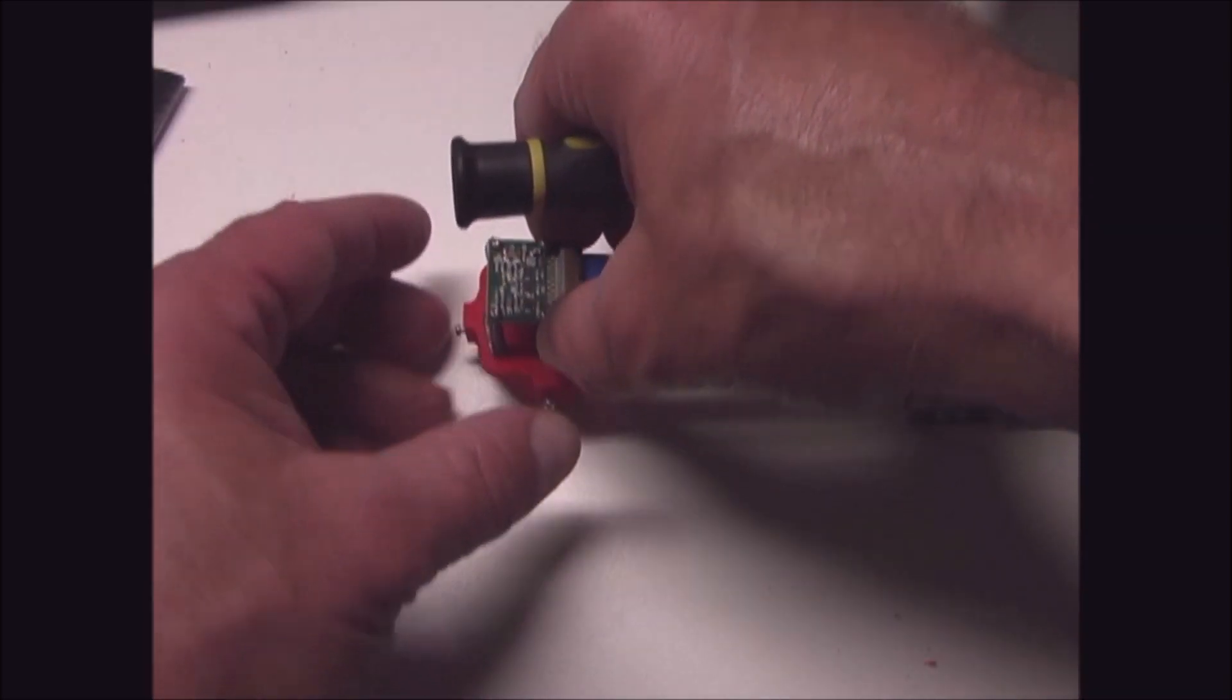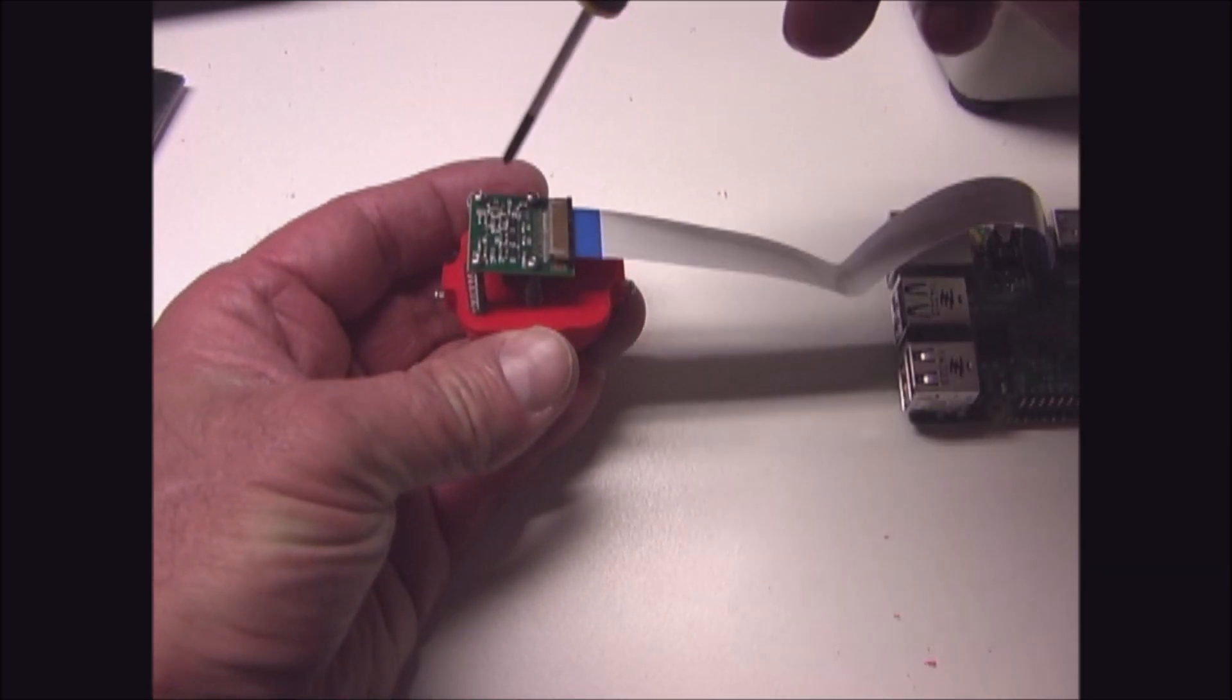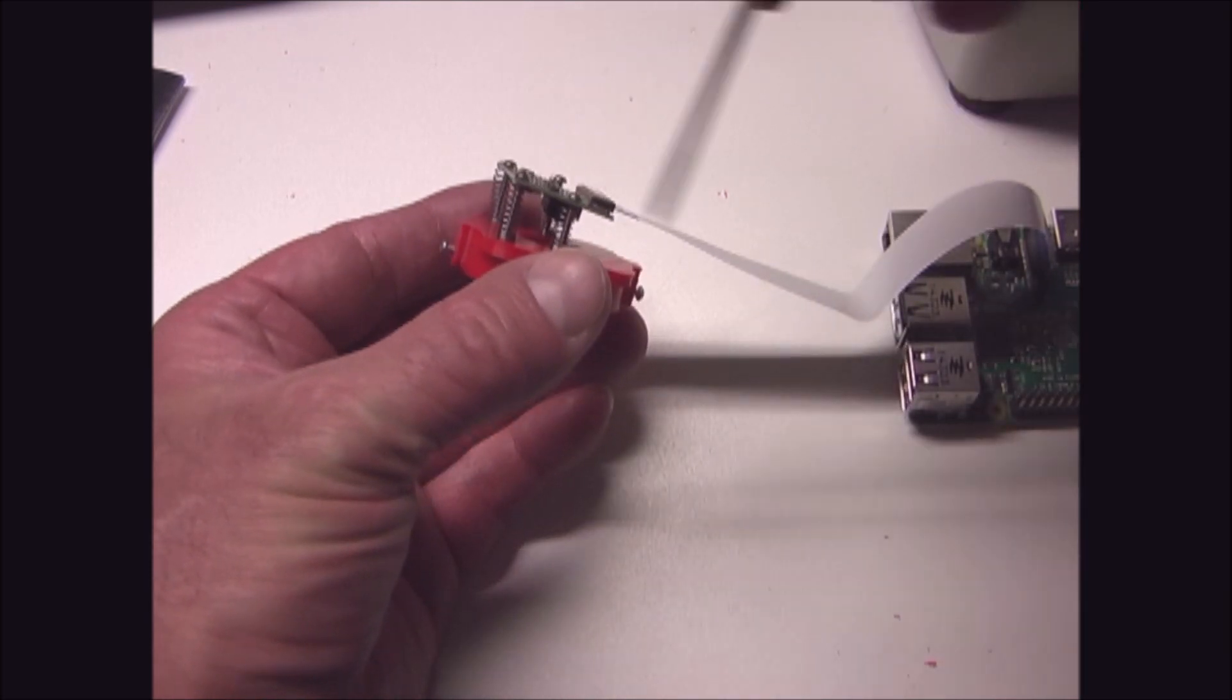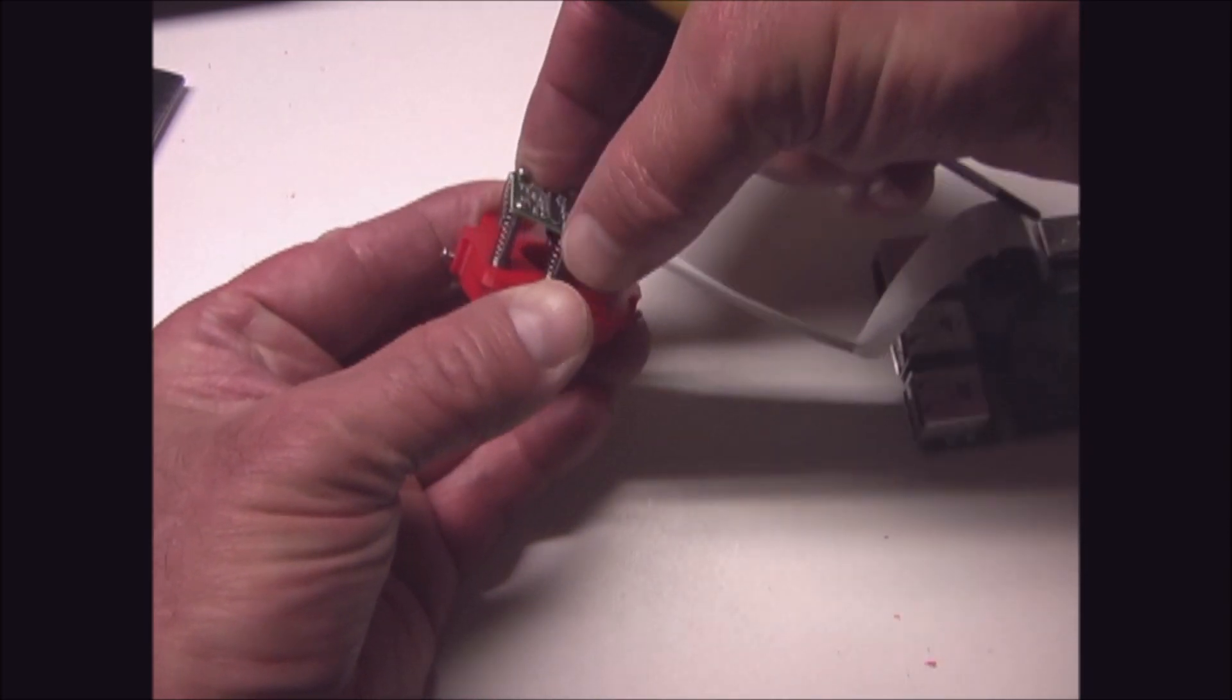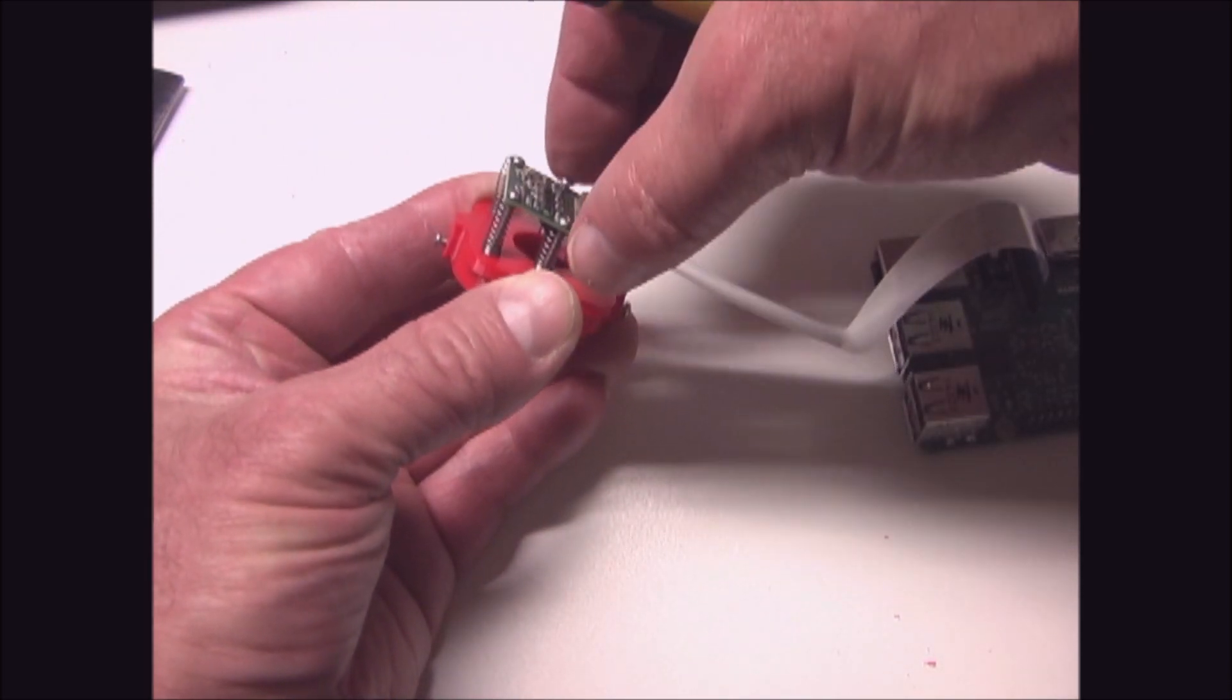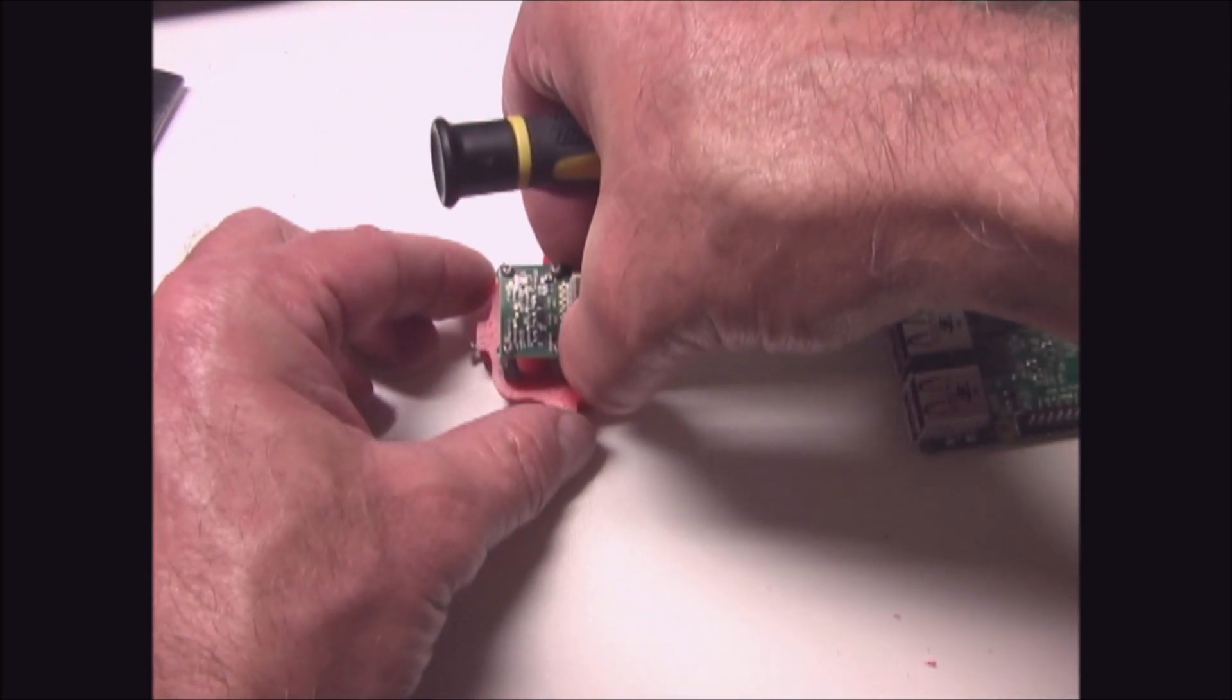The camera is attached to the 3D printed mount with 4 screws. Between the camera and the mount are 4 springs. This allows me to adjust the camera left and right and up and down so I can focus the camera correctly.